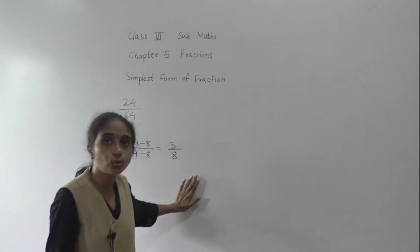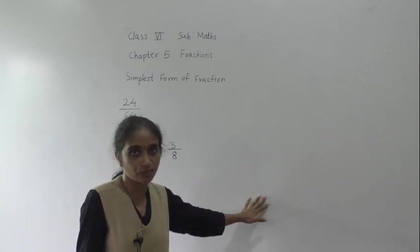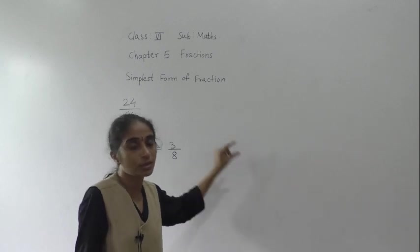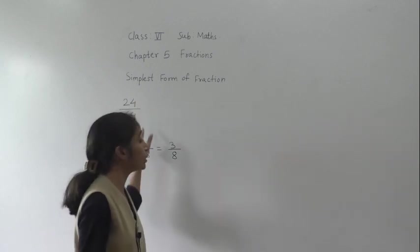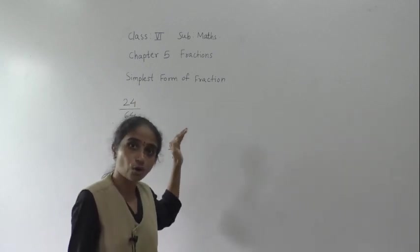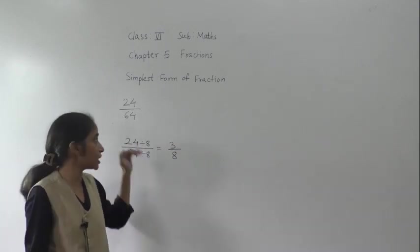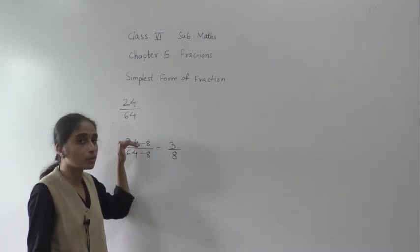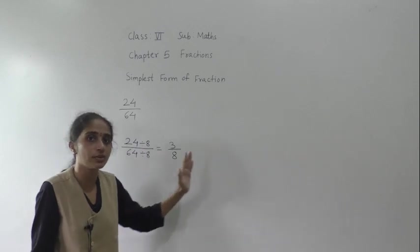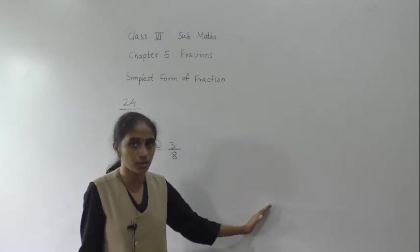We can find the HCF of the given numbers and divide both the numerator and denominator by that HCF. Or we can check which common table both numbers belong to and divide by that number. Both methods give the simplest form of the given fraction.